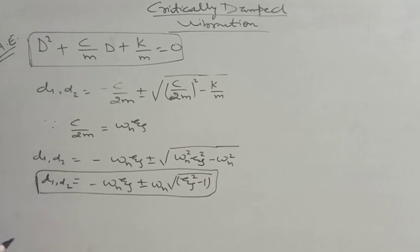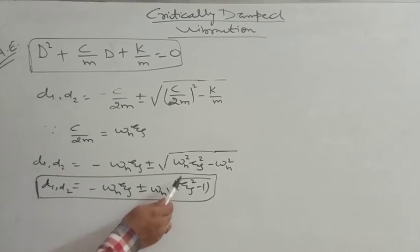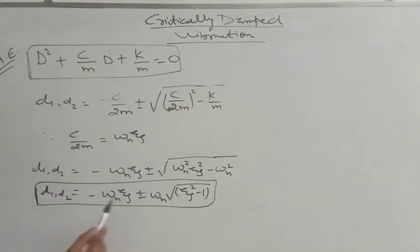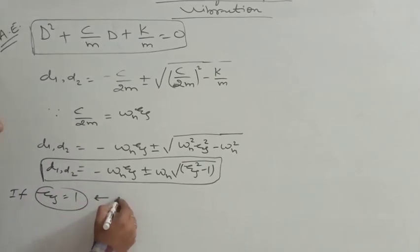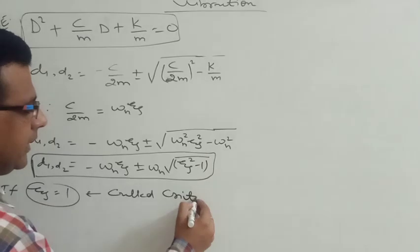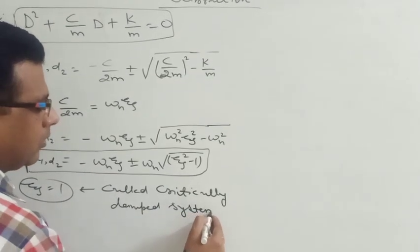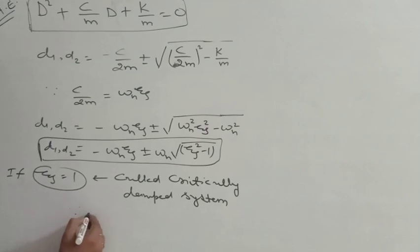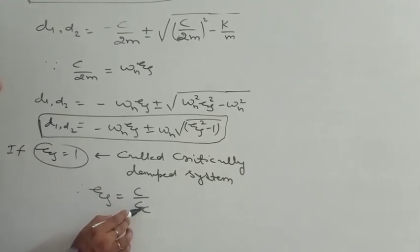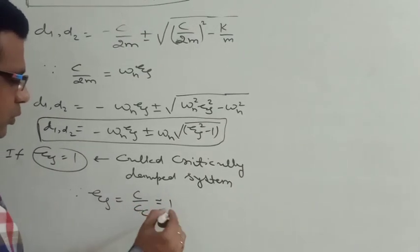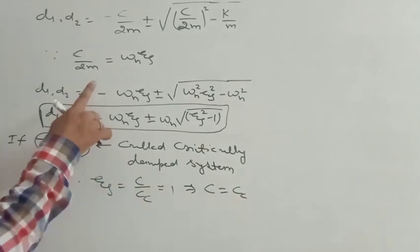Taking omega_n as common, the roots are omega_n times the square root of zeta squared minus 1. As per our classification, if the value of zeta is greater than one, the system is over-damped. Now we are considering the critically damped case, where zeta equals 1. Here zeta is c/cc, where c is the damping coefficient and cc is the critical damping coefficient.